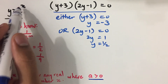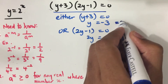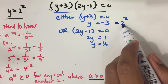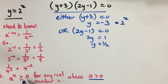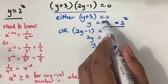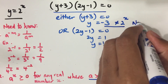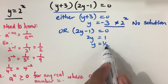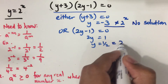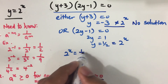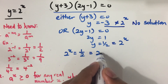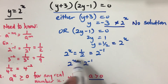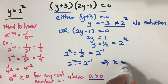Since y equals 2 to the power of x, if y equals negative 3, then negative 3 equals 2 to the power of x. But 2 is positive, so 2 to the power of x is always greater than 0, meaning there is no solution for this case. When y equals one half, we have 2 to the power of x equals one half, which equals 2 to the power of minus 1. Comparing powers, x equals minus 1, which is the answer.